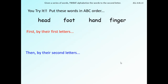Now I want you to try this on a sheet of paper. Put these words in ABC order: head, foot, hand, and finger. First sort by the first letters, then by the second letter. We have H, F, H, F. Singing through — A, B, C, D, E, F — F goes first. So we have 'foot' and 'finger.' Looking at the second letters: O and I — which one goes first? 'Finger' should go first.